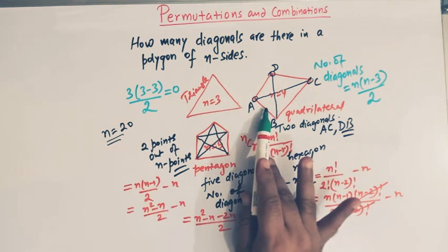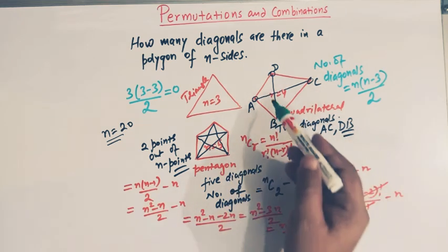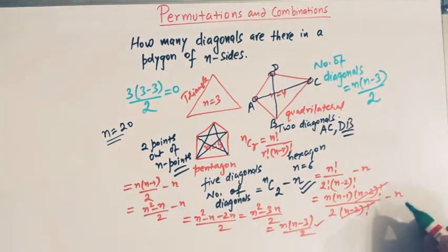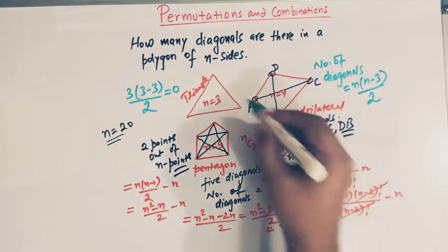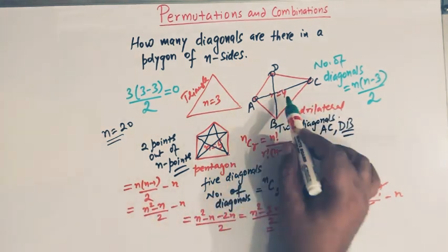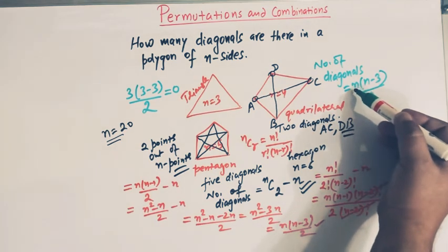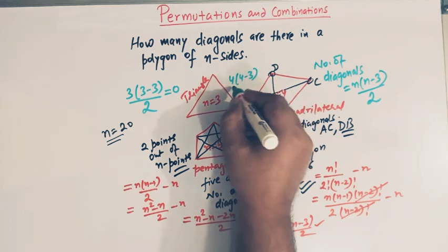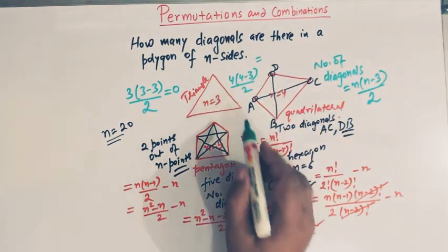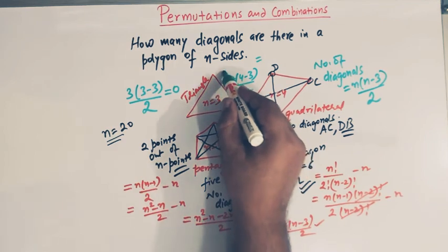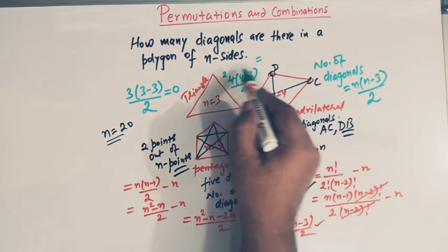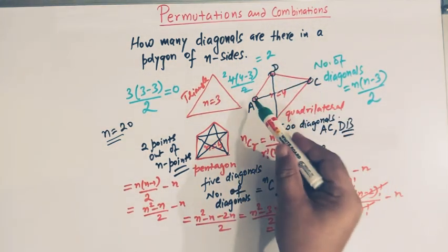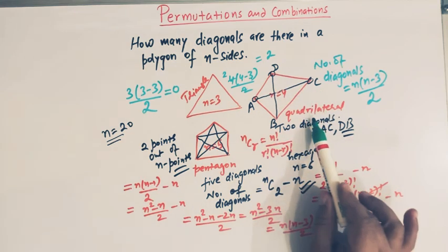For a quadrilateral, we know there are two diagonals. Let us verify with the formula. With n equal to 4, we get 4 times (4−3) divided by 2, which is 4 times 1 divided by 2, giving us 2. This confirms a quadrilateral has 2 diagonals.